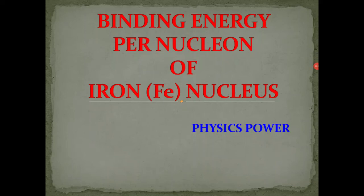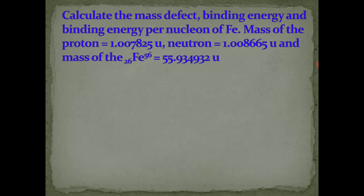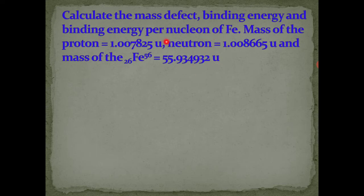We will calculate the binding energy per nucleon of the iron nucleus. Consider this as a problem: calculate the mass defect, binding energy, and binding energy per nucleon of iron. Given: mass of the proton and neutron in AMU, and the actual mass of iron that is 55.934932 AMU. To find binding energy per nucleon, we first need binding energy, and for that we need mass defect, because binding energy equals mass defect times C squared.